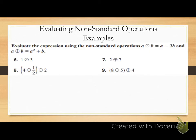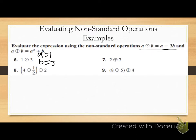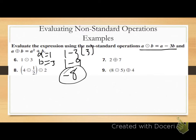It's very similar to the examples we just did. It says: evaluate the expression using the non-standard operations, a circle-dot b equals a minus 3b, and a circle-plus b equals a squared plus b. So for number 6, I'm using this first expression. My a value is 1, my b value is 3. Plugging into the first expression: 1 minus 3 times 3. Do my multiplication first — 3 times 3 is 9. 1 minus 9 gives me negative 8 for number 6.